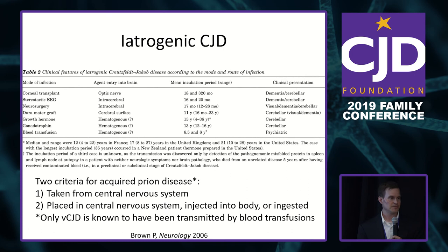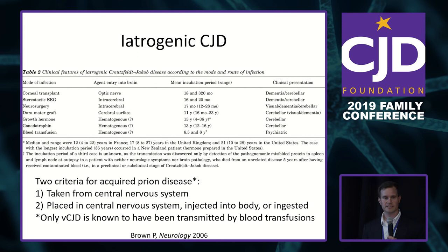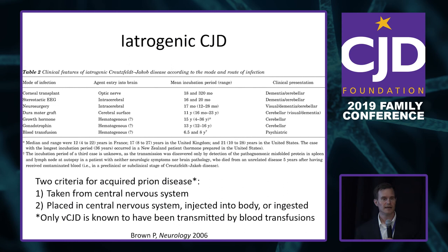Prion disease is transmissible, so families often ask about risk of caring for a loved one. Simplistically: infected tissue has to be taken from the central nervous system — the brain — and then either placed into another person's CNS, injected in large quantities, or ingested in large quantities. Nowadays we don't do most of that, so the risk of acquiring CJD is very limited to specific procedures.